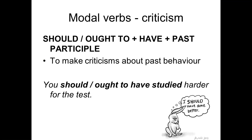For criticism — when we want to blame someone — we use 'should have' or 'ought to have' plus the past participle. For example: 'He failed the exam — you should have studied harder' or 'You ought to have studied harder.' Here we are not giving advice but blaming someone for something they did or didn't do.